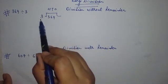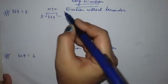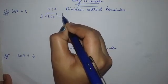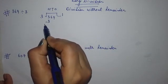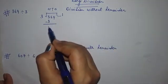3 divided by 3 which is equals to 1. So write 1 here and here 3 will come. Now subtract these two numbers 3 minus 3 equals to 0.